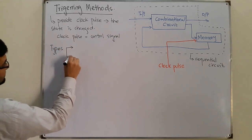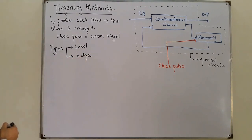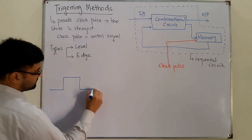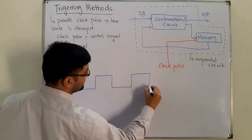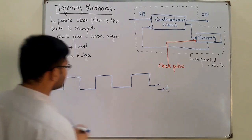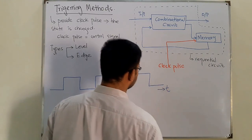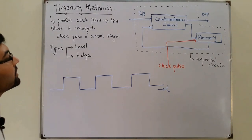We have two types of triggering: level triggering and edge triggering. Let me draw the waveform. This is a clock signal of 50% duty cycle, which means the time for which the signal is high is equal to the time for which the signal is low. Now, what is level triggering?